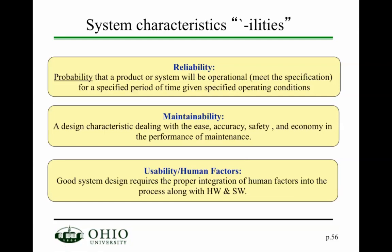The next couple of slides cover the so-called 'abilities,' which are really the definitions of certain system characteristics. When you write requirements, you define certain characteristics of the system, and these are often called the 'abilities.' For example, reliability is the probability that a product or system will be operational for a specific period of time given a specific operating environment — essentially, is it going to break anytime soon? We'll talk more about reliability in the next module.